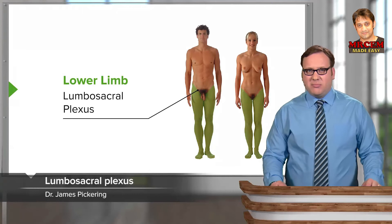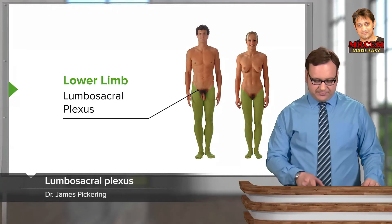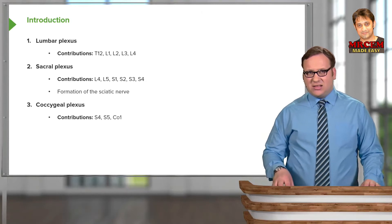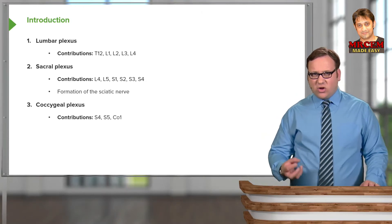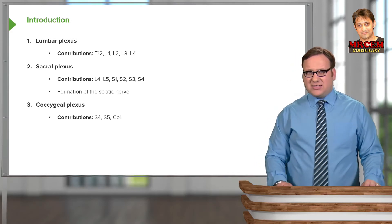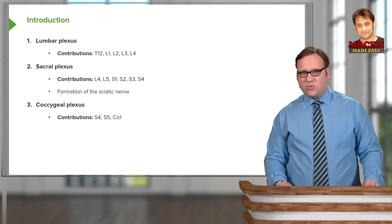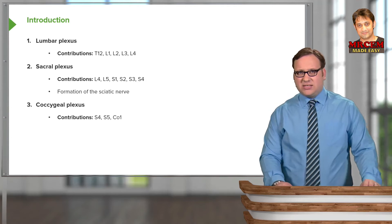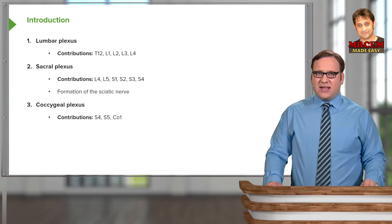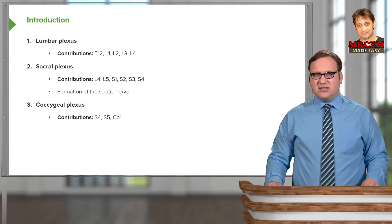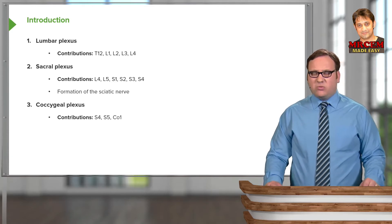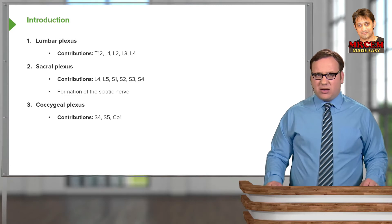In this lecture we're going to look at the lumbosacral plexus. We'll look at the lumbar plexus, the sacral plexus, and the coccygeal plexus, with all of these constituting the lumbosacral plexus. Contributions for the lumbar plexus are from T12, L1, L2, L3 and L4. The sacral plexus has contributions from L4 all the way down through to S4, and this is important as it gives rise to the sciatic nerve. The coccygeal plexus comes from S4, S5 and the one coccygeal spinal cord segment.